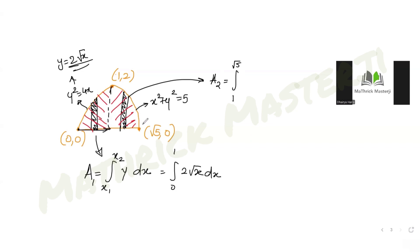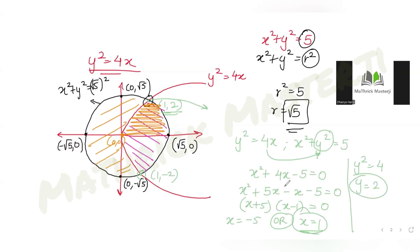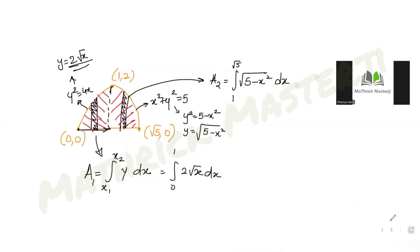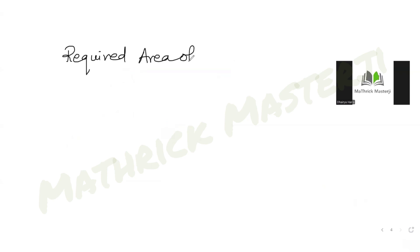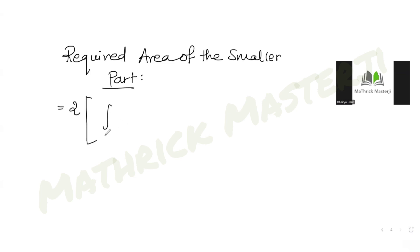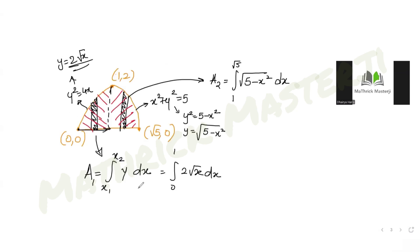For the second part — under the circle from x = 1 to x = √5 — we have x² + y² = 5, so y = √(5 − x²). The required area of the smaller part is therefore: 2 × [∫₀¹ 2√x dx + ∫₁^√5 √(5 − x²) dx].